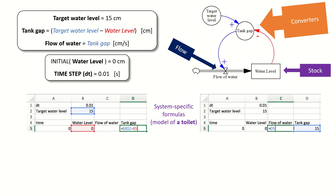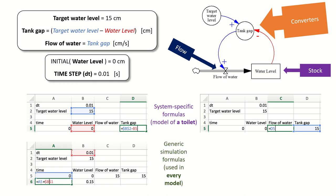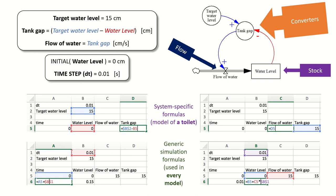All other formulas look the same for any stock and flow model. We set up initial stock levels, any parameters, converters to convert from stocks to flows, and then the flow formulas. Once we've set up the first row, we fill everything down. The time column is just the previous time plus DT. The stock column is the previous stock plus the previous flow times DT. The flow and tank gap use the same formulas as in the first row. You drag this down as far as you want and the toilet level gets closer and closer to the target water level.